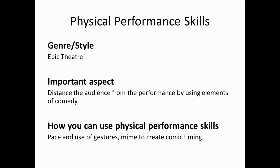Here is an example of how you can develop style and genre by identifying an important aspect and showing this through the use of physical performance skills. The example is use of epic theatre. The important aspect is that the audience needs to be at times distant from the performance, and using elements of comedy can help with this. You can then use physical performance skills such as use of pace, exaggerated gestures, and mime to create the comic timing.